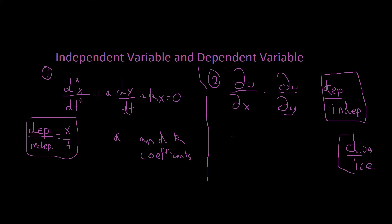Let's go on with the problem. We can identify what our independent variable is — it's always going to be what's on the bottom. So our independent variables are x and y, and our dependent variable is going to be u. There are no coefficients here, so we don't have to worry about that.